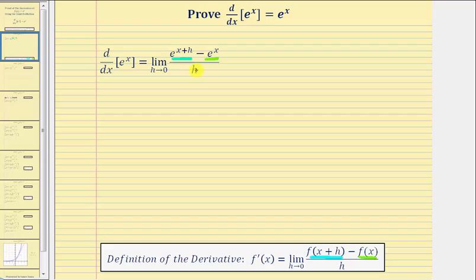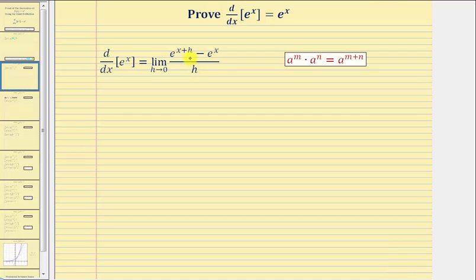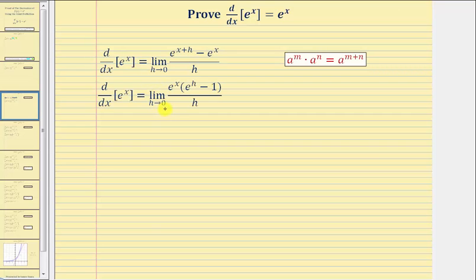For the next step, we're going to use a property of exponents to factor the numerator. Remember, when the bases are the same, we add the exponents, and therefore e raised to the power of x plus h is equal to e to the x times e to the h. We therefore have a common factor of e to the x in the numerator. So if we factor the numerator, we'd have the limit as h approaches zero of e to the x times the quantity e to the h minus one.